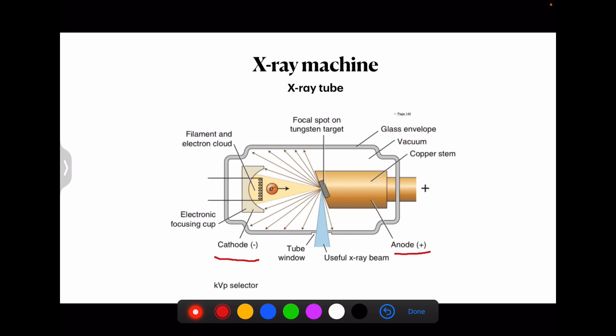The molybdenum focusing cup basically electrostatically focuses all the electrons emitted by this filament into a narrow beam at a small area on the anode known as the focal spot, as seen here.